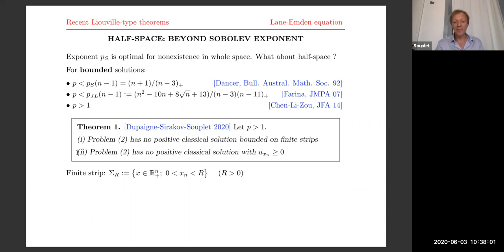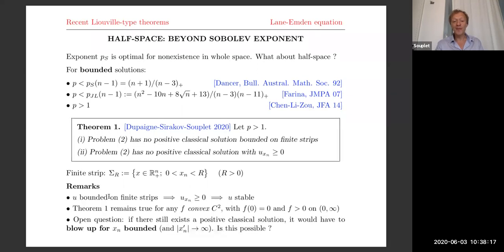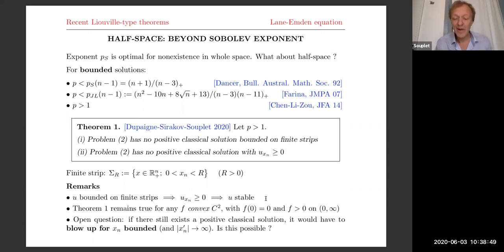A parallel statement is: there can neither exist positive classical solutions which are increasing in the normal direction. In fact, the second statement is slightly more general, because one can show by moving planes that any bounded solution on finite strips has to be monotone in the normal direction — this is essentially Dancer's moving plane argument. One can even embed all these solutions in a larger class, which is the class of stable solutions. We don't yet have a nonexistence statement for stable solutions in half space for all P.